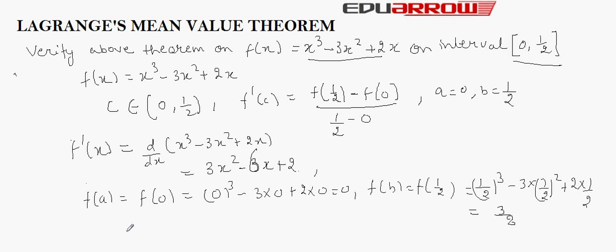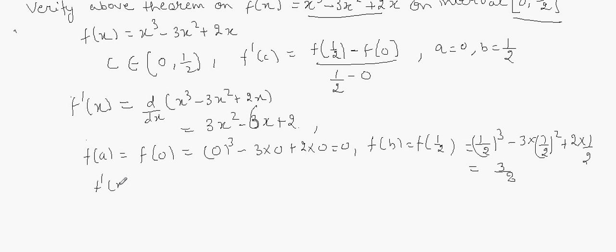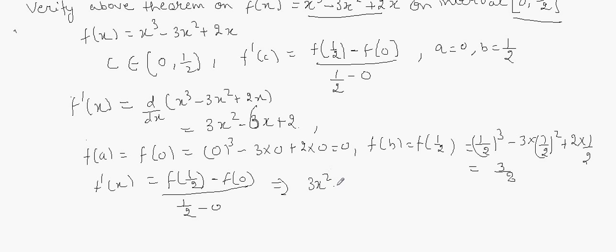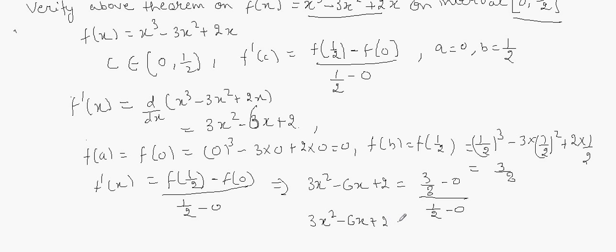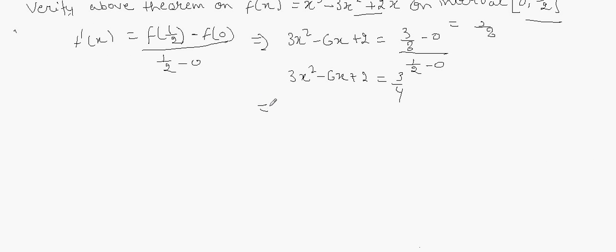So equating these two equations, we get F'(C) equal to F(1/2) minus F(0) over 1/2 minus 0, which gives 3X² minus 6X plus 2 equals 3/8 minus 0 over 1/2. Simplifying, 3X² minus 6X plus 2 equals 3/4, which gives 12X² minus 24X plus 5 equals 0 by cross multiplication.